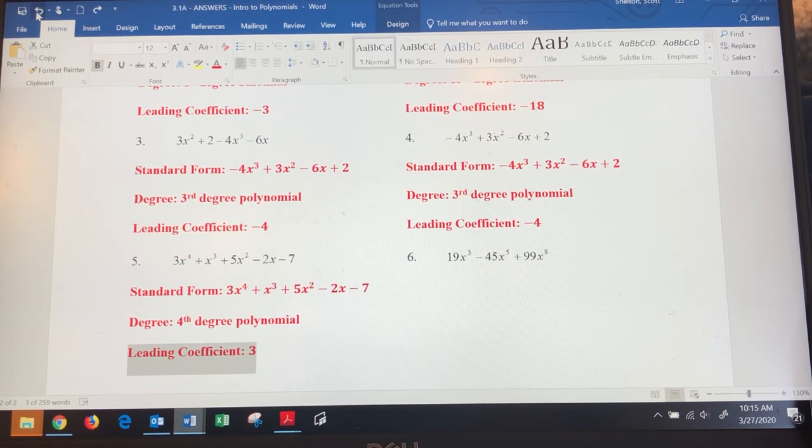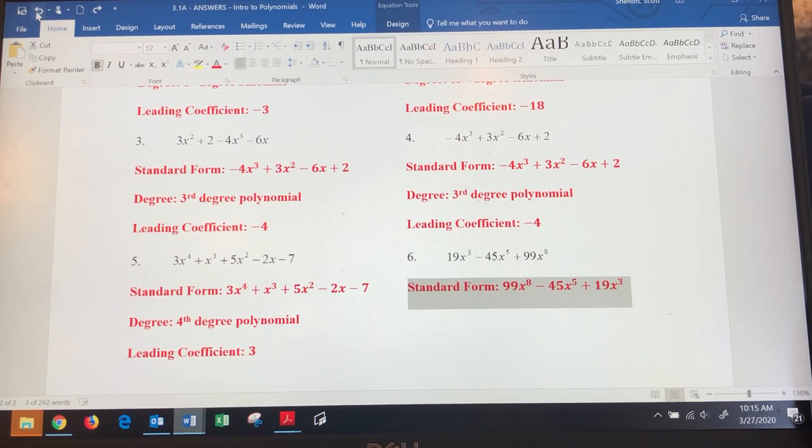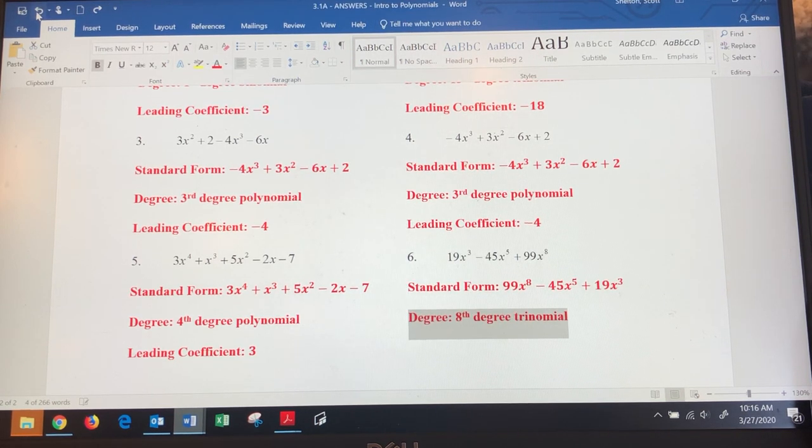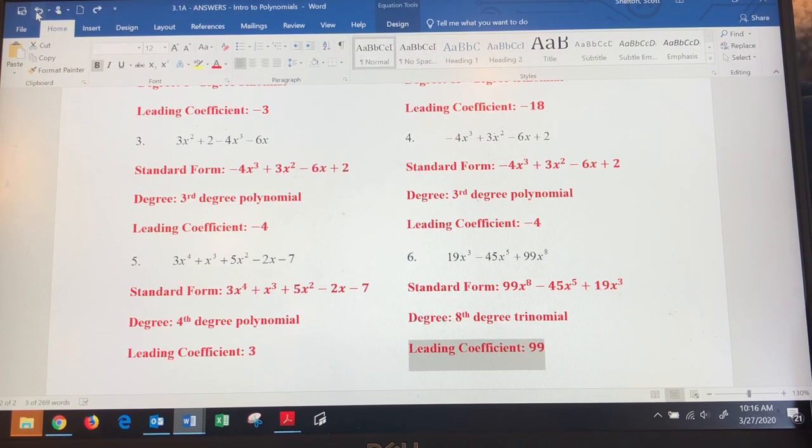Number six: we need to rewrite. Standard form is going to be 99x^8 - 45x^5 + 19x^3. Three terms, so that's a trinomial of the 8th degree, and then we've got a leading coefficient of 19. Hope that helps. We'll do more of these later. Take it easy.